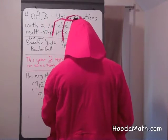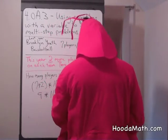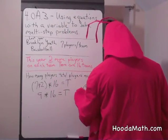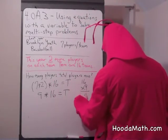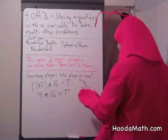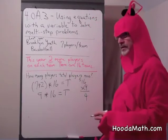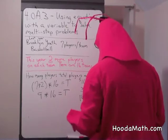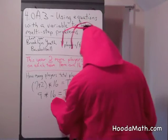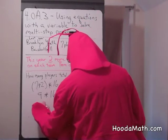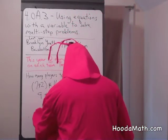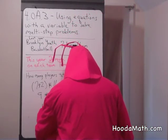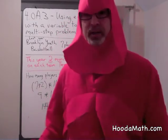Nine times 16 equals the total. Nine times six is 54. Regroup: nine times one is nine, plus five is 14. So there are a total of 144 players. Good job. I am the Math Lobster.